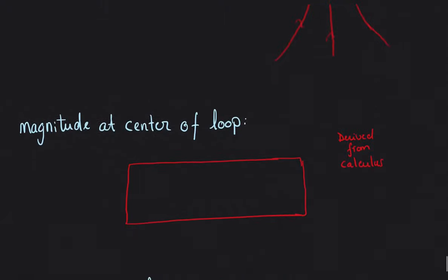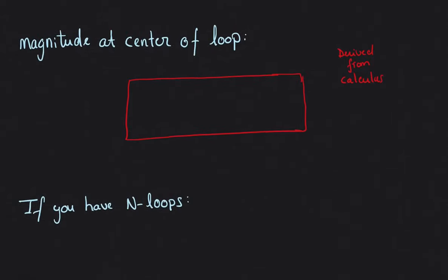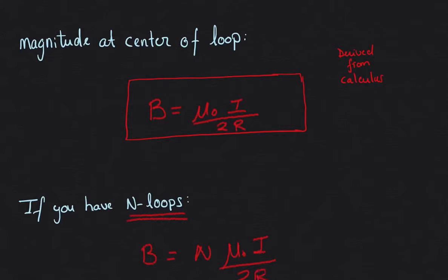Let's find the magnitude of the magnetic field at the center of the loop. Using an equation derived from calculus, B = μ₀I / 2R, where R is the radius of the loop. If you have N loops, then B = Nμ₀I / 2R, where N is the number of loops, μ₀ is the constant, I is the current, and 2R is twice the radius.